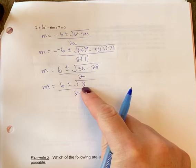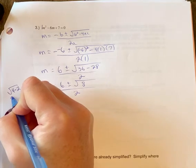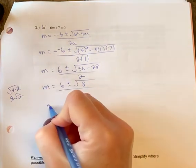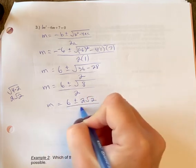...remember the two numbers that multiply to 8 will be 4 and 2, and 4 is a perfect square, so this is 2 root 2. So m is equal to 6 plus or minus 2 root 2 over 2.